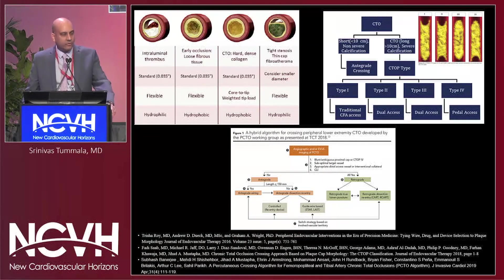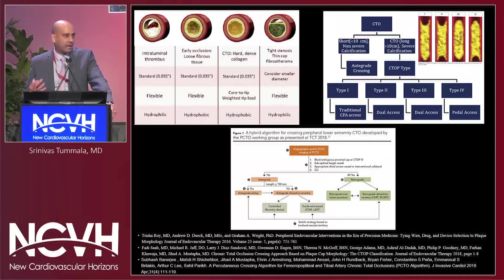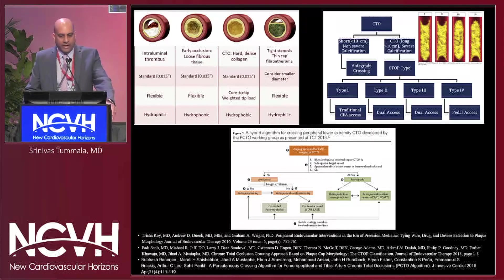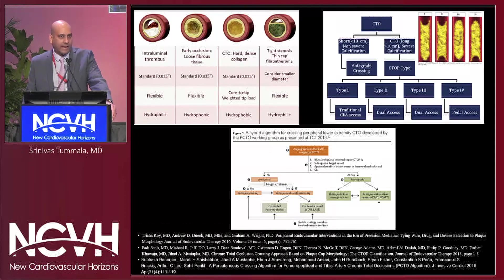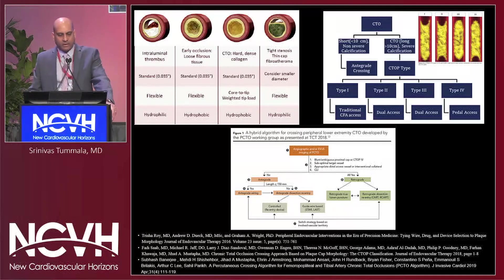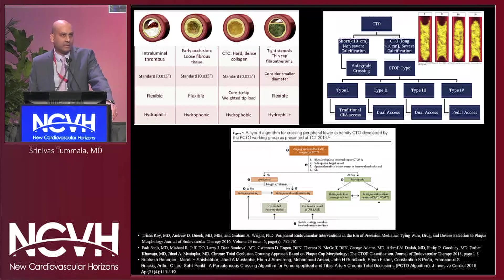Over the years, we've had some really interesting algorithms published in terms of how best to cross a CTO. Dr. Roy and her group published their algorithm based on plaque morphology and composition — what type of guidewire to choose, what type of catheter to use. Shortly thereafter, Dr. Saab and his team published what is probably the most practical algorithm: the CTO classification, showing what plaque morphology and cap morphology can do to help us determine single versus dual access and whether to go retrograde first. Dr. Banerjee and the PCTO working group then came up with their algorithm, incorporating a lot of the CTO data about a year later.